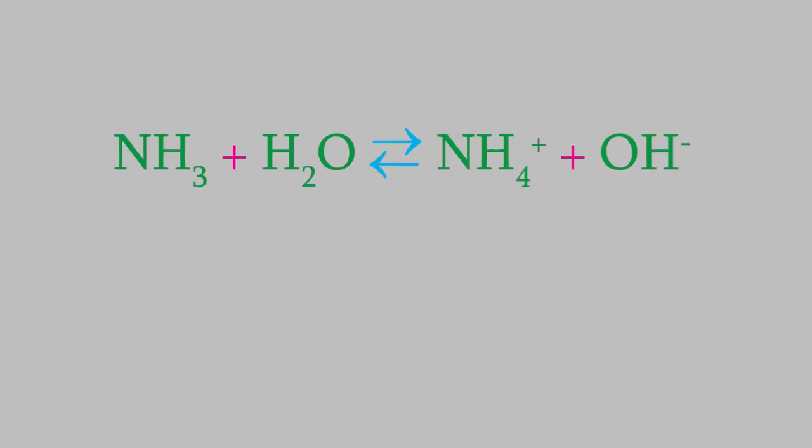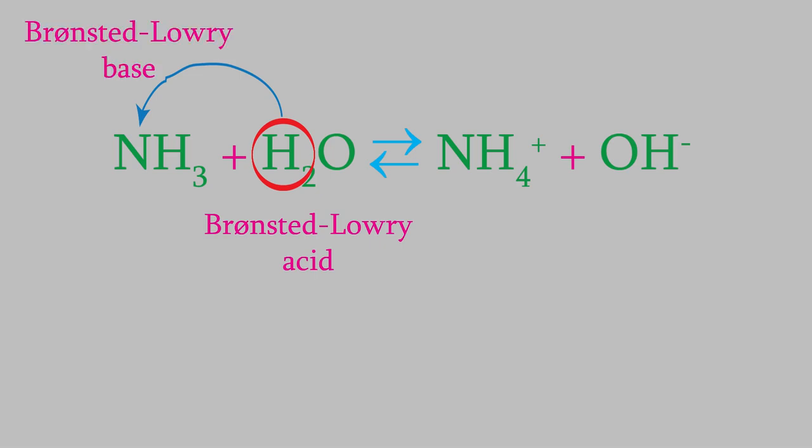Now, here's a reaction between ammonia and water. This time, the water donates a hydrogen to the ammonia, so that makes water the acid and ammonia the base. After the water donates the hydrogen, all that's left is a hydroxide ion, so that's the conjugate base. And the ammonium ion is the conjugate acid.